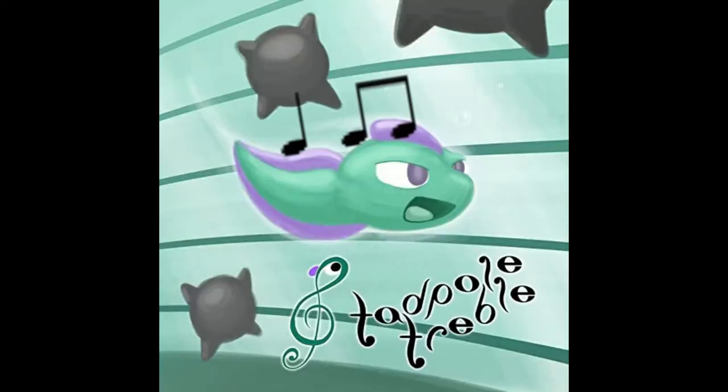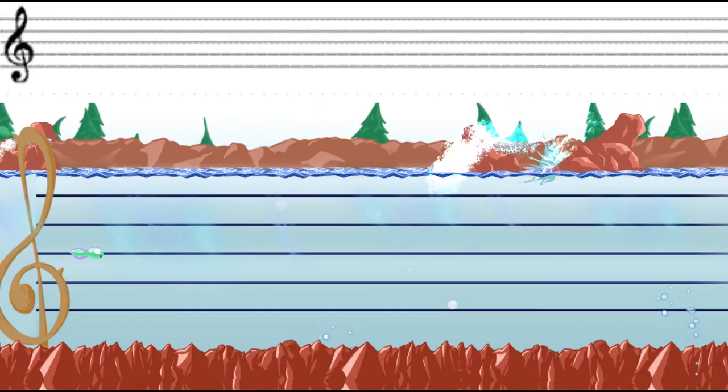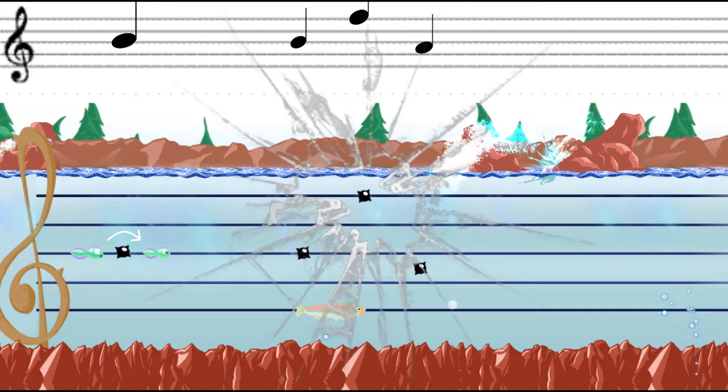Tadpole Treble is a rhythm game where adventure awaits on a musical score. Dodging hostile creatures and notes in the way, it's only natural that a glitch that can teleport you past danger is quite game-breaking.